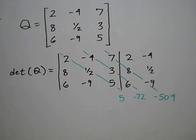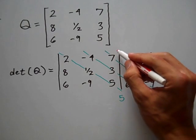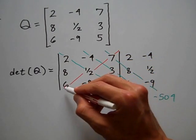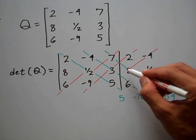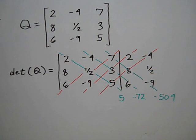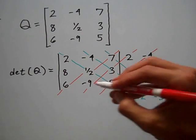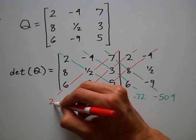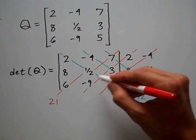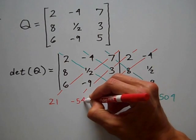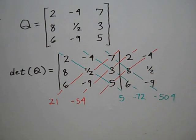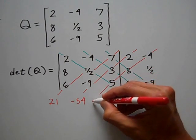And then I'm going to multiply along the 3 diagonals that go in the opposite direction — this diagonal, this diagonal, and this diagonal. Multiplying along that first diagonal: 7 times 1 half times 6, that's 21. Multiplying along this diagonal: 2 times 3 times negative 9, that's negative 54. And multiplying along this diagonal: negative 4 times 8 times 5, that's negative 160.